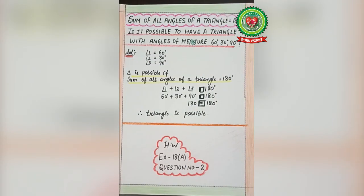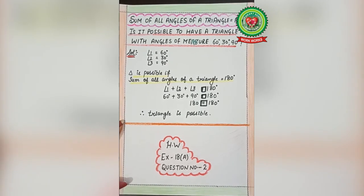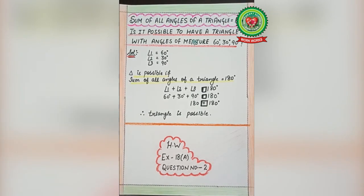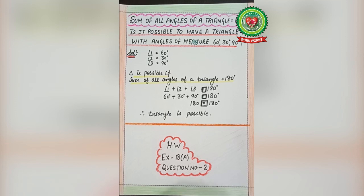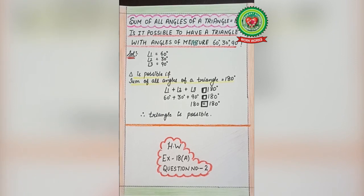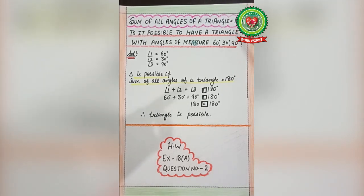Now let's move to the next topic: the sum of all angles of a triangle equals 180°. This property you have also learned in fifth and sixth standard and have done related sums. We will just recall this property — the angle sum property of a triangle states that the sum of all angles equals 180°.